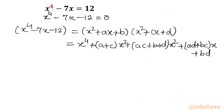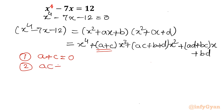Now we will compare either side of the equation. The coefficient of x³ gives equation 1: a + c = 0. The coefficient of x² gives equation 2: ac + b + d = 0, because there is no x² term on the left-hand side.